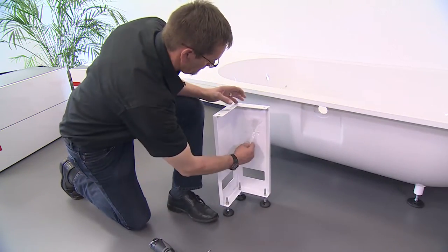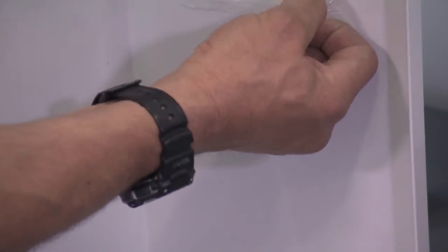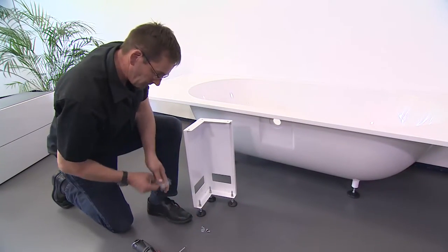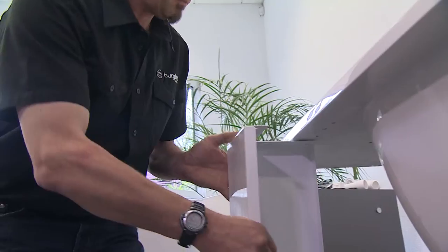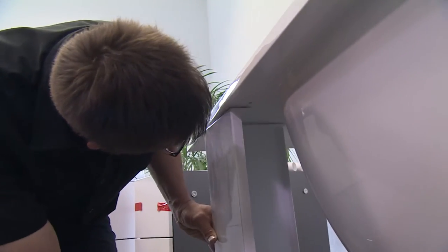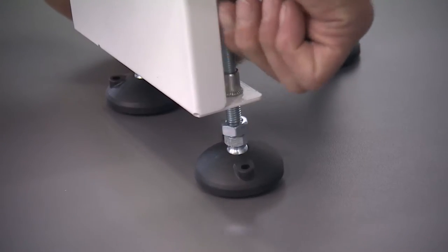Install the leveling frames using the screws and fittings supplied. Secure the frames at the mounting points provided. Holes have been pre-drilled on the underside of the bath to accept the screws.